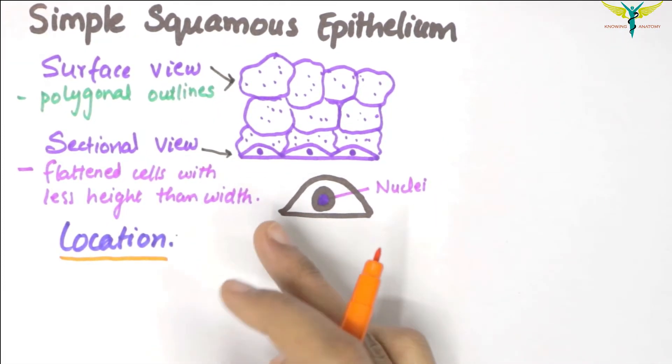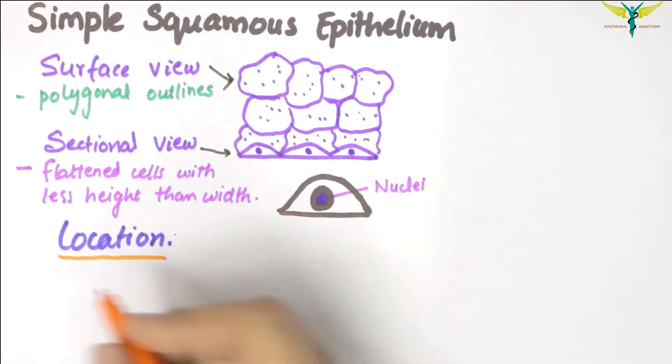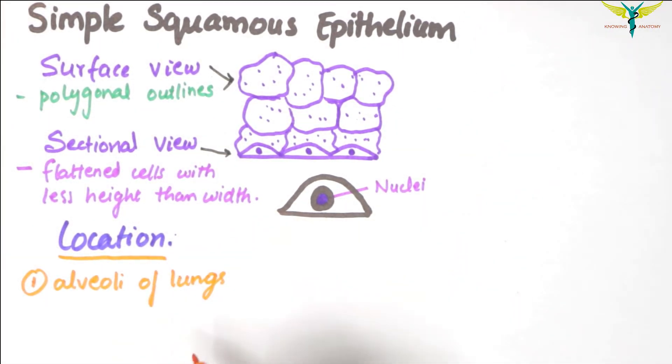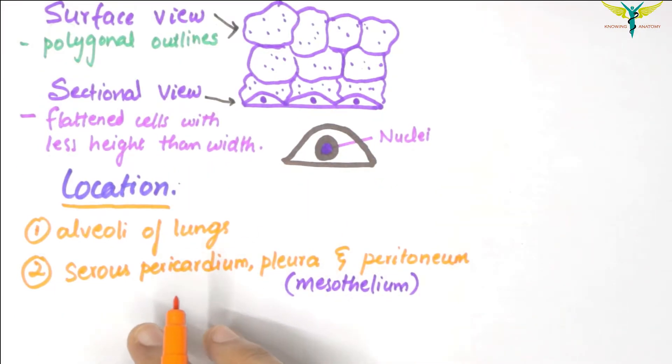The simple squamous epithelium lines the alveoli of the lungs. It lines the free surface of the coverings, that is the serous pericardium, pleura, and the peritoneum, and as it covers these surfaces it is also called mesothelium.